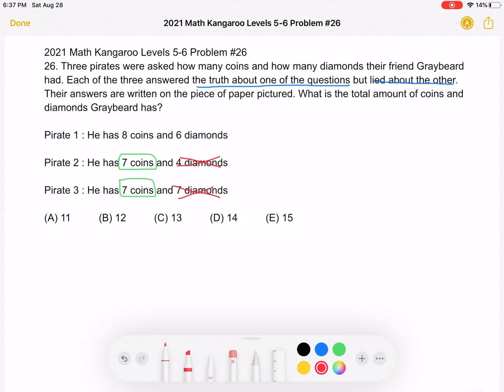So now let's look at pirate 1. Well, we just determined that seven coins is the number of coins that Greybeard has. So eight coins in this case must be the lie. And that means that the six diamonds is the true part of pirate 1's statement.